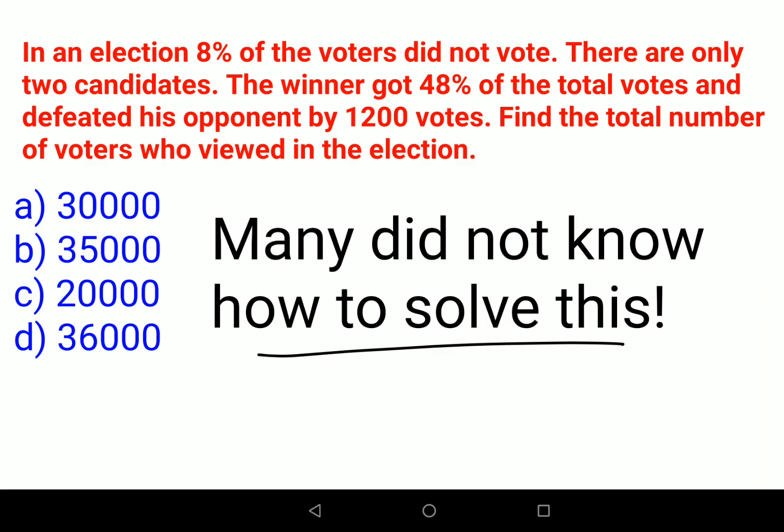Let's understand the question first. They are saying in an election, 8% of the voters did not vote. There are only two candidates. The winner got 48% of the total votes and he defeated his opponent by 1200 votes.